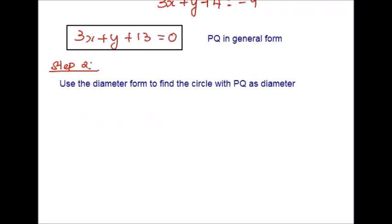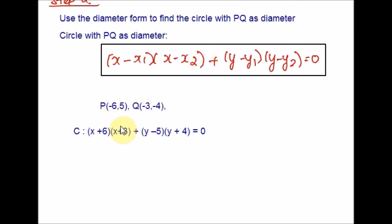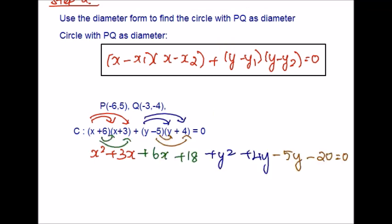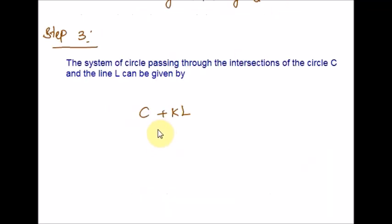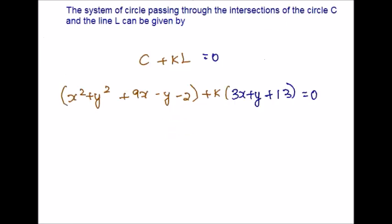We got PQ in general form. Now let's use the diameter form to find the circle with PQ as its diameter, plugging in P and Q, performing FOIL, and simplifying to get circle equation C. The system of circles passing through the intersection of circle C and line L can be written as C + kL = 0. We substitute the equations from steps 1 and 2 to form this system.